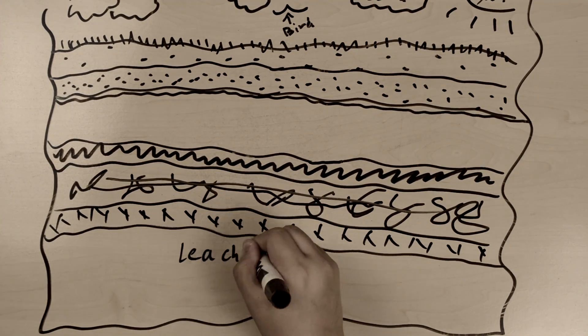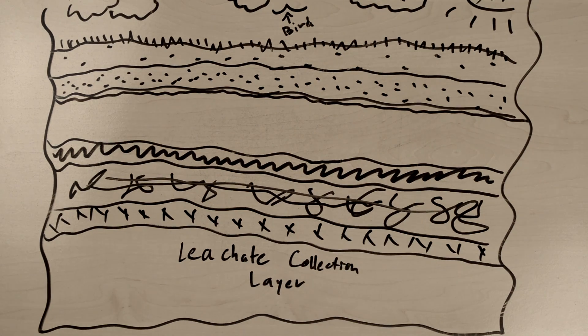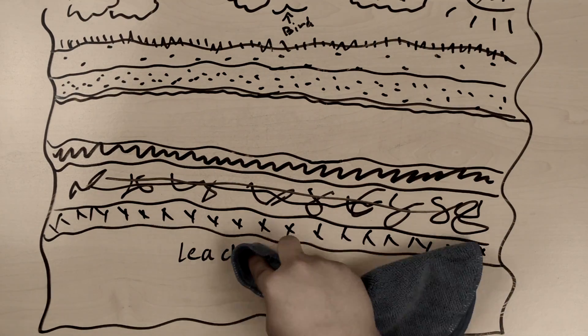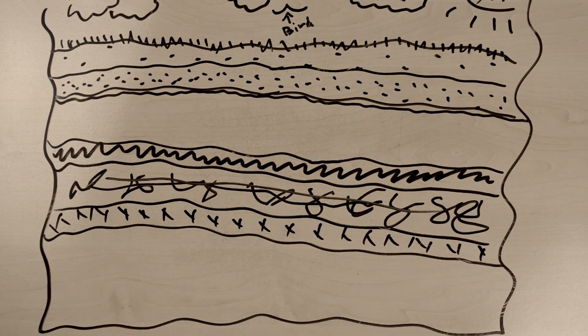Moving on, we have our leachate collection layer. This is a layer of sand or gravel or a thick plastic mesh, again called geonet, which collects leachate and allows it to drain via gravity to the leachate collection pipe system.